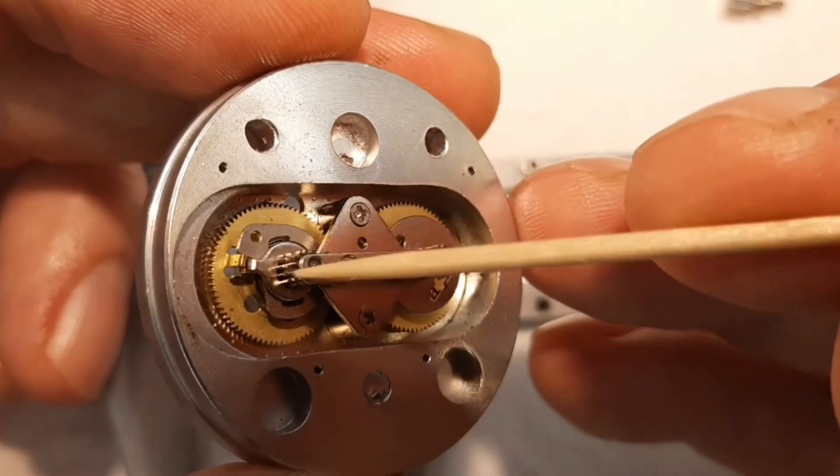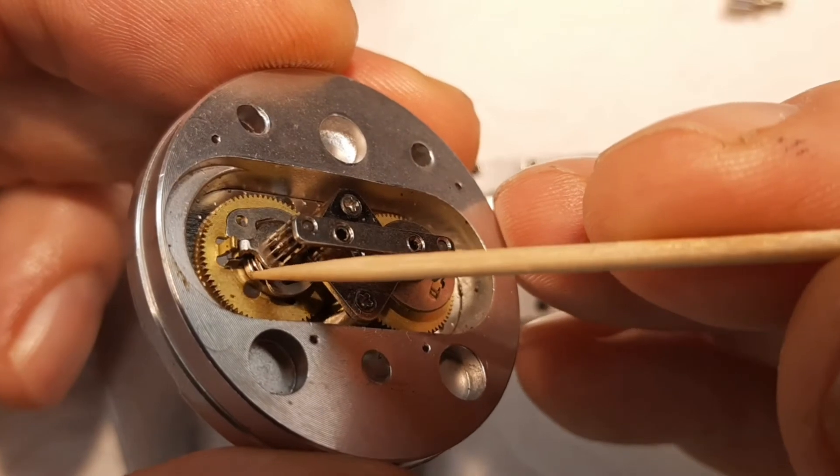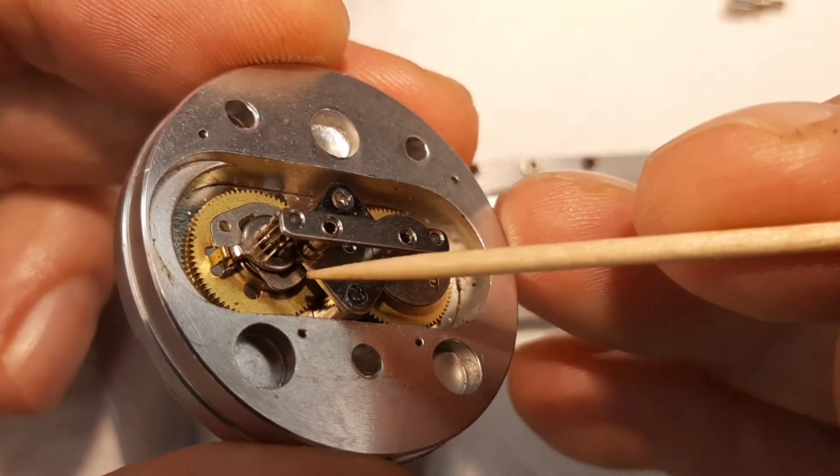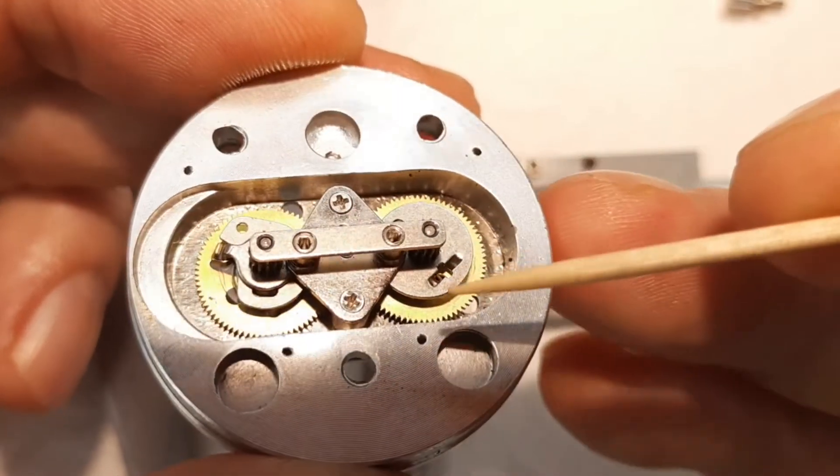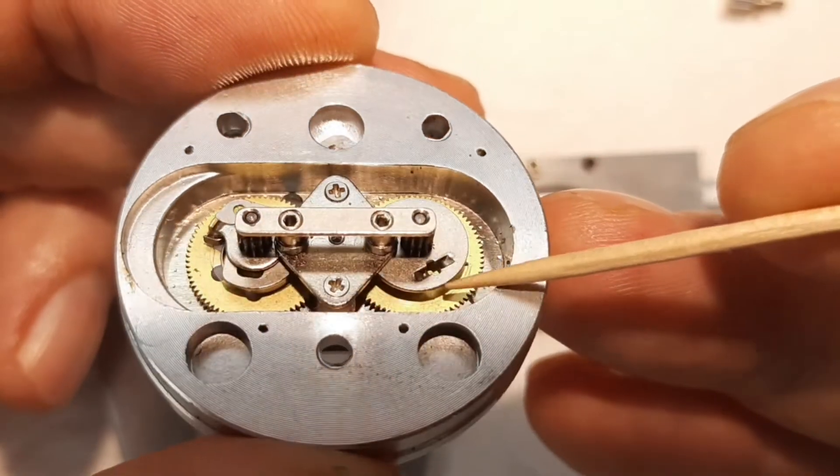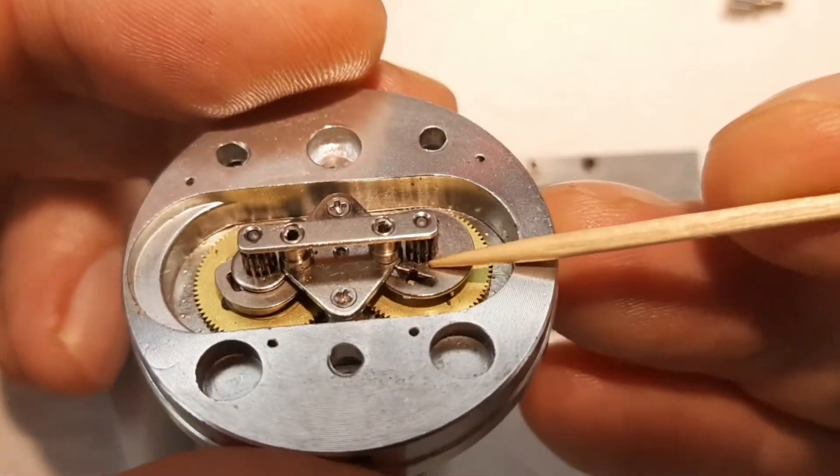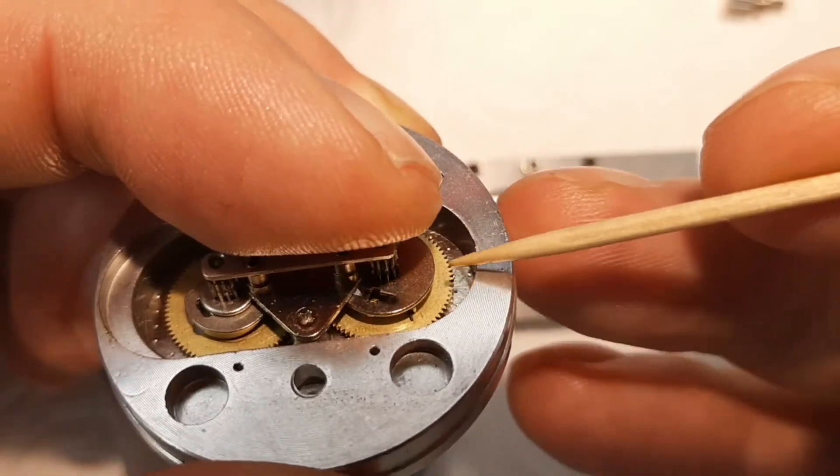These two golden colored big gears here, they are not even rigidly coupled to the small gears. In between I can see some tiny, tiny springs.